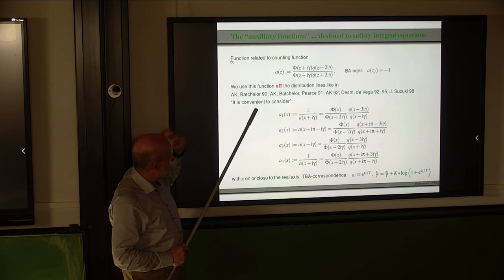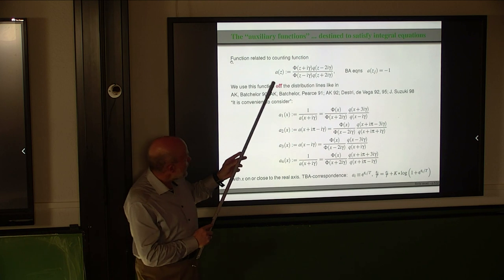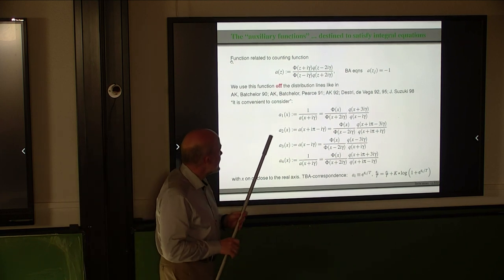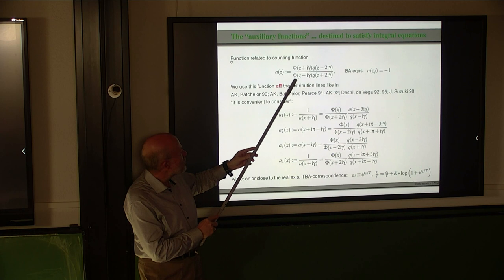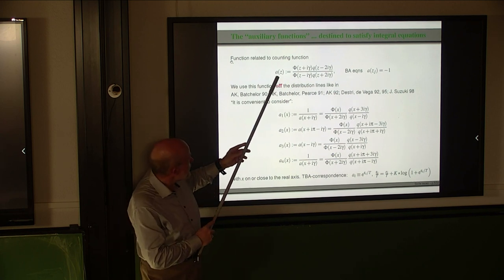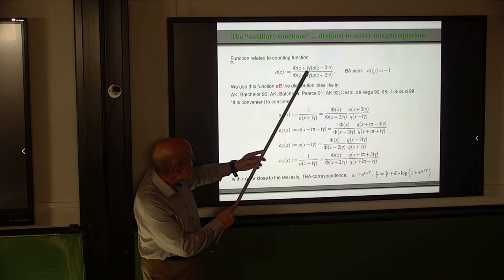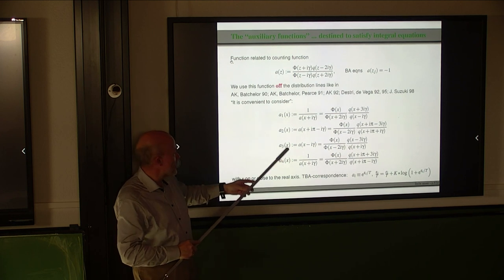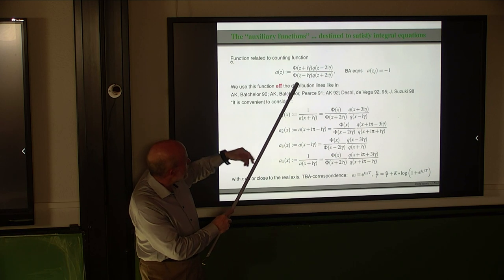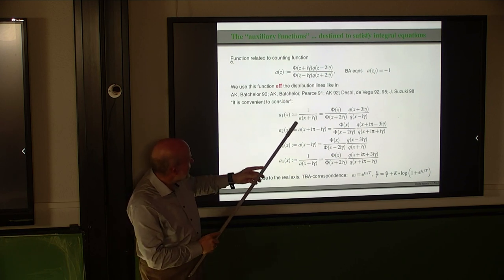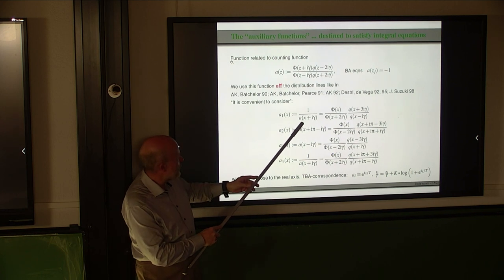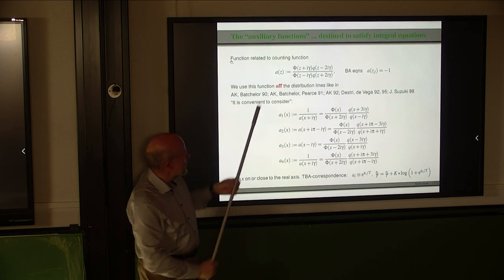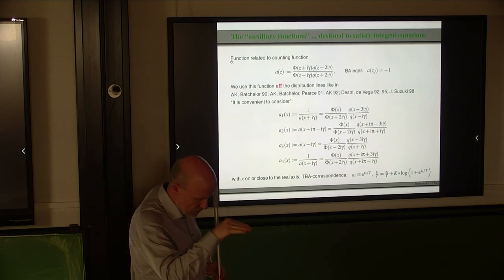Let me apply this approach to this problem. We take this auxiliary function a(z) and investigate it on straight lines that go through zeros and poles of the function phi. We look at the real axis shifted by −iγ, and then this function a(x − iγ) for real x is called a₃(x). For the case real axis + iγ, we hit a pole, and we look at the reciprocal — we call this a₁. There are similar cases where we hit zeros or high-order poles of phi, shifted by πi, giving functions a₁, a₂, a₃, a₄.